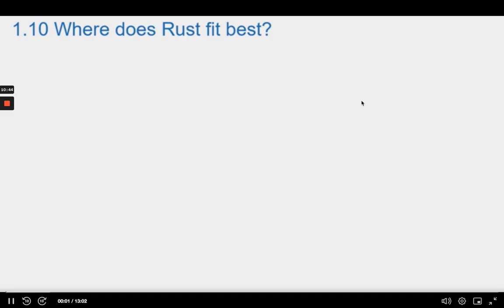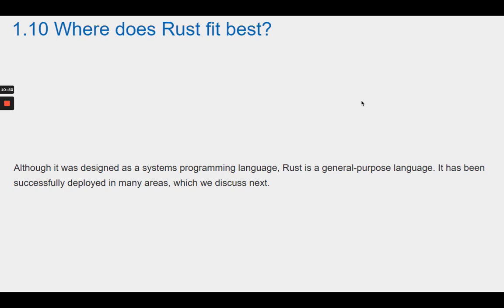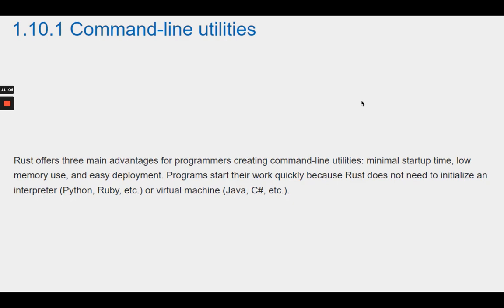Section 1.10 Where does Rust fit best? Although it was designed as a systems programming language, Rust is a general purpose language. It has been successfully deployed in many areas. Section 1.10.1 Command Line Utilities. Rust offers three main advantages for programmers creating command line utilities: minimal startup time, low memory use, and easy deployment. Programs start their work quickly because Rust does not need to initialize an interpreter — Python, Ruby, etc. — or virtual machine — Java, C-sharp, etc.